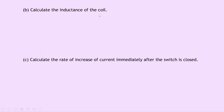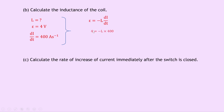Part B says to calculate the inductance of the coil. We're trying to find L. Epsilon is 4 volts from part A, and dI/dt is 400 amperes per second. Using epsilon equals minus L times dI/dt, substituting in gives 4 equals minus L times 400. Rearranging for L gives minus 0.01 Henrys, but we can ignore the minus sign — the magnitude is the important part here.